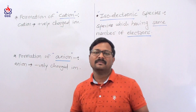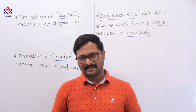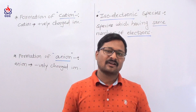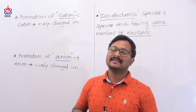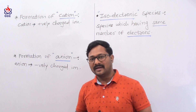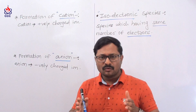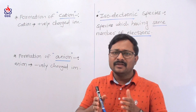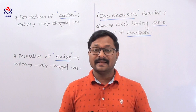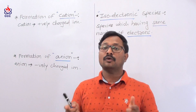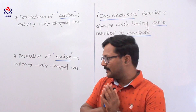So these are the ions. Positively charged ions are called cations, while negatively charged ions are called anions. When a neutral atom loses one or more electrons, then it forms a positive charge on it and it becomes a cation.